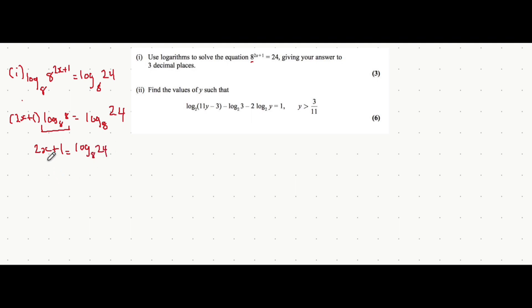From here, you can just find the value of x by rearranging. So subtract 1 from both sides and divide both sides by 2 to get x equals log base 8 of 24, all to degree 1, divided by 2. Now, you can put this in the calculator and it'll give you your answer to 3 decimal places. Hopefully that all made sense.